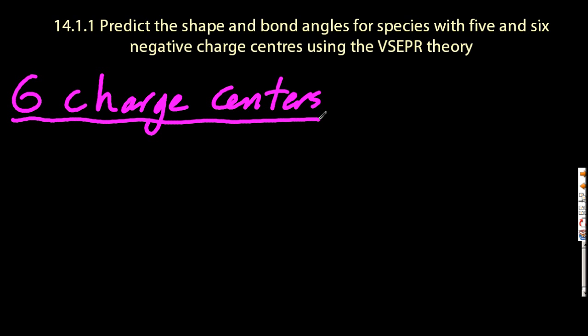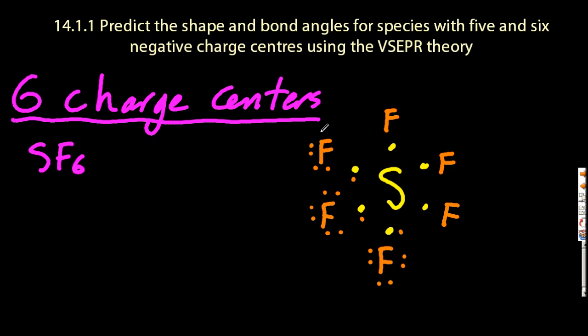Let's look at six charge centers. Sulfur hexafluoride. Again, sulfur's in group six, so I'll put six electrons around the outside. And those six fluorines are probably going to go there as well. Filling in those electron pairs.